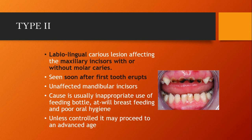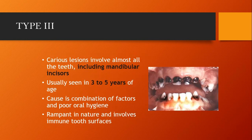Type 2 is a bit more advanced. There is a labiolingual caries lesion affecting the maxillary incisors with or without molar caries. It is seen soon after the first tooth erupts. Mandibular incisors, as you can see in the picture, are unaffected by caries. The cause is usually inappropriate use of feeding bottle, breastfeeding practices, and poor oral hygiene. Unless controlled, it may proceed to an advanced stage.